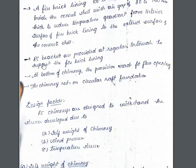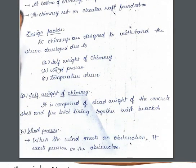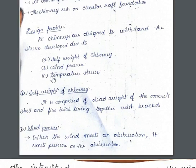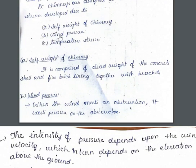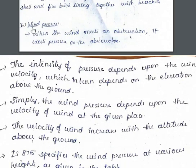RC brackets are provided at regular intervals to support the fire brick lining. At the bottom, provision is made for the flue opening, and the chimney rests on a circular raft foundation. Regarding design factors, RC chimneys are designed to withstand stresses due to three causes: self-weight of the chimney, wind pressure, and temperature stresses. The self-weight comprises the dead weight of the concrete shell and fire brick lining, together with the brackets.